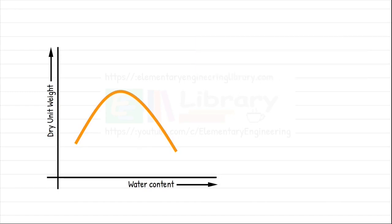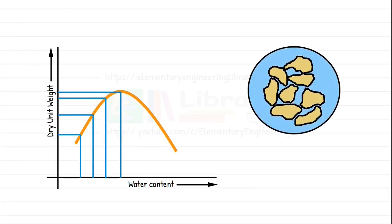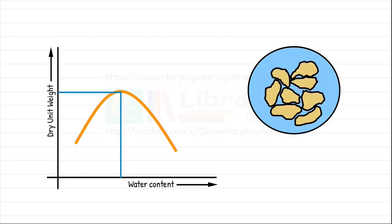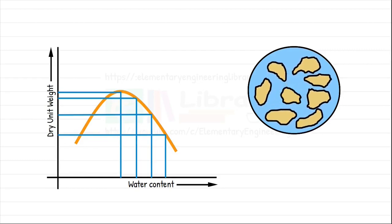In the curve we observe the dry density of soil increases with the increase in water content till a maximum value is reached. It happens because water acts as a lubricating agent and helps particles move more easily to achieve denser configuration. Then if we keep on adding the water to the soil, the dry density begins to decrease.